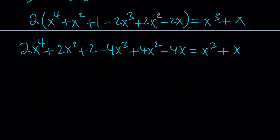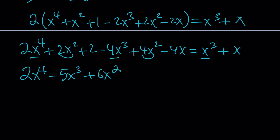Now let's go ahead and combine like terms. We have 2x to the 4th — there's no other x to the 4th. We have minus 4x cubed minus x cubed, that's minus 5x cubed. Then 2x squared plus 4x squared is 6x squared. And minus 4x minus x is minus 5x, plus 2. So the equation equals 0.